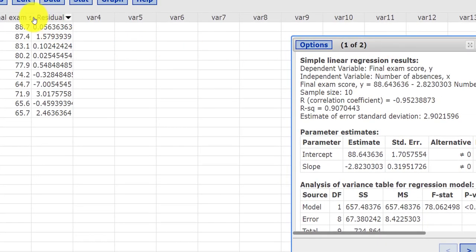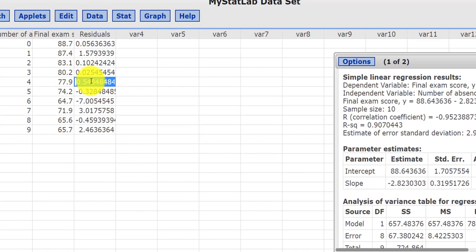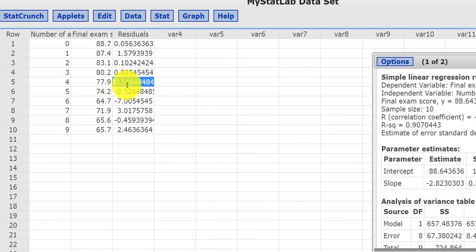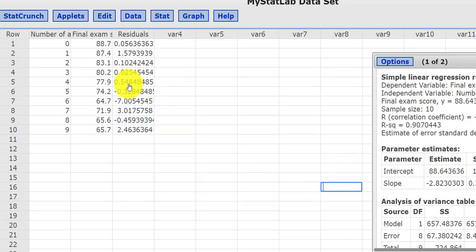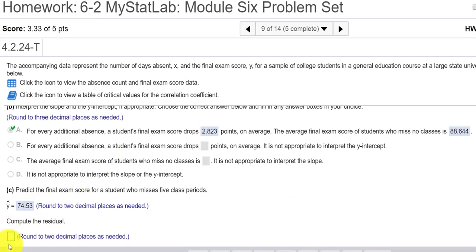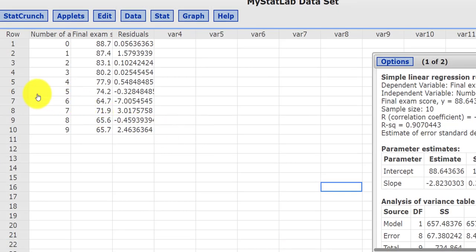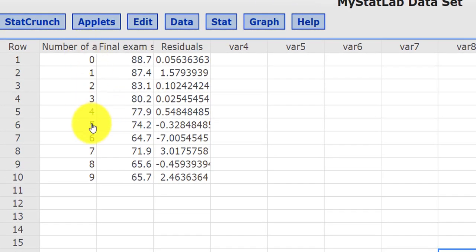So someone that had five absences, the residual would be 0.548. It would be this value here, 5484. So let's put that in. And it did say two decimal places. So let's call that 55. And I just want to double check to make sure I did that okay. All right, five classes. Oh, I was on the wrong line.